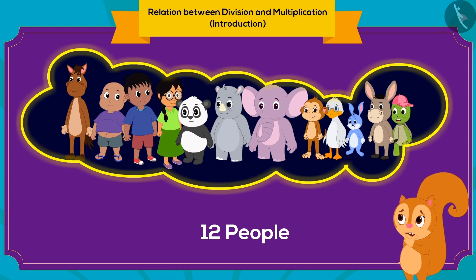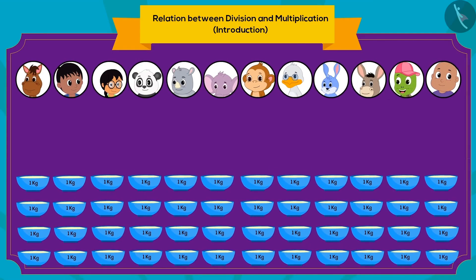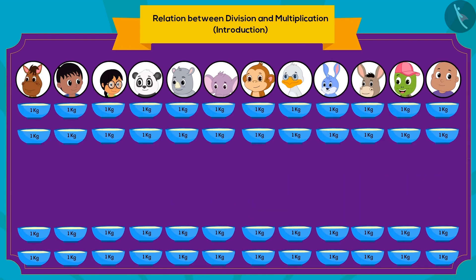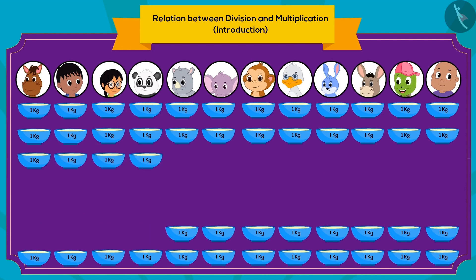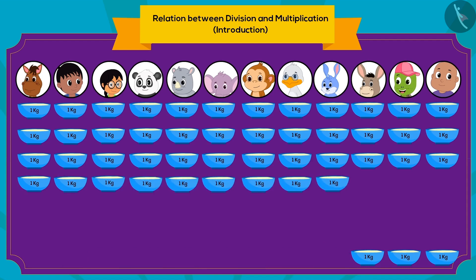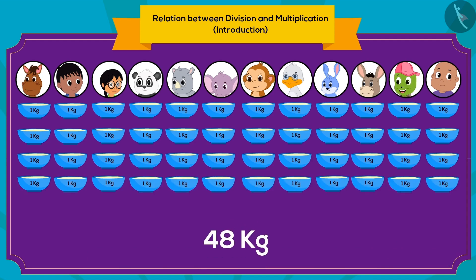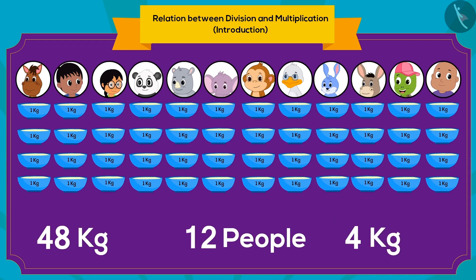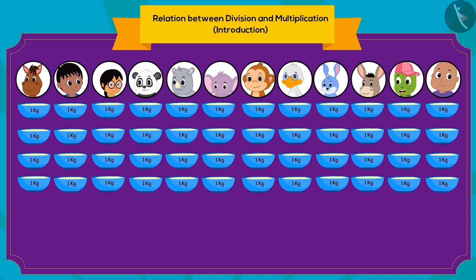Can you tell how much kheer each villager would get? Chanda first gave 2 kg of kheer to each individual, then 1 kg more, and finally 1 more kg. This way, Chanda divided 48 kg of kheer equally among 12 people, and each person received 4 kg of kheer. How can we write this using division?